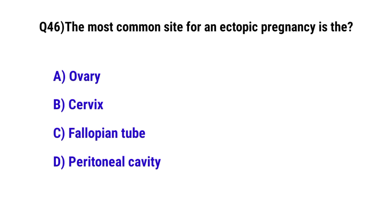Question number 46. The most common site for ectopic pregnancy. The correct option is C: Fallopian tube.